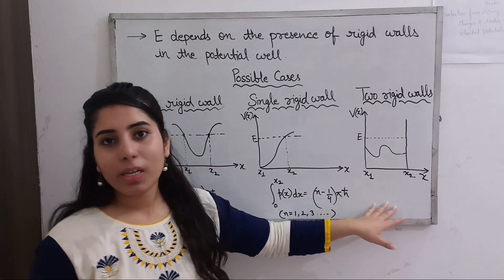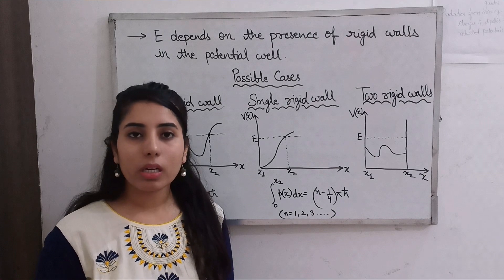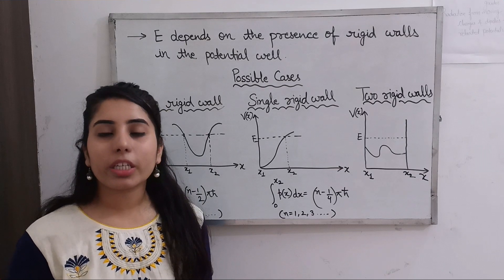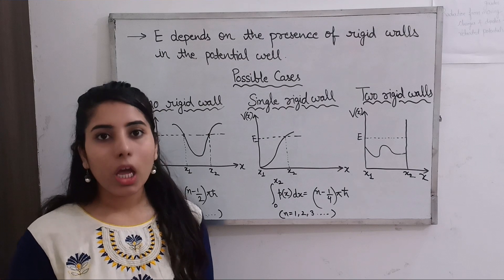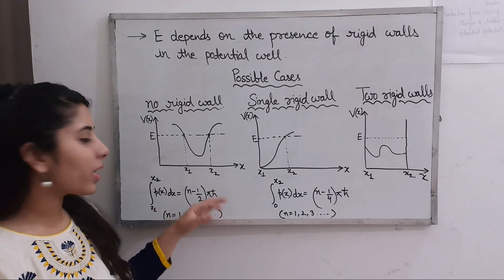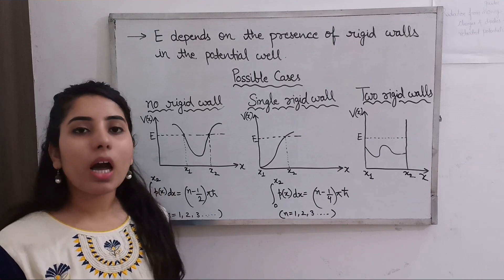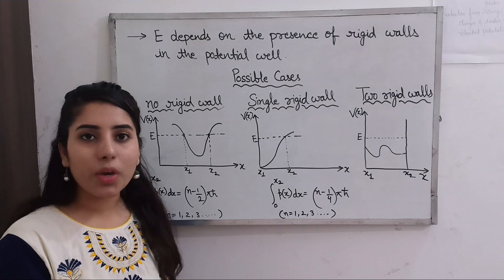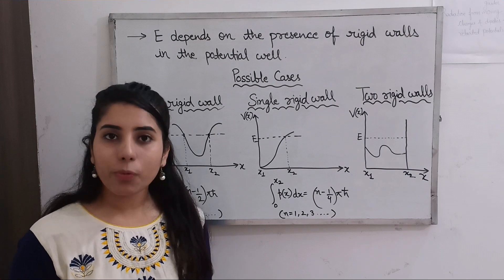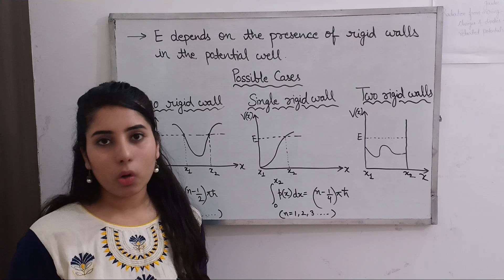I am going to tell you a common formula for the WKB method in the next video. My suggestion is to remember that one common formula, because using separate formulas for each case can lead to confusion. With just one formula, you put in the appropriate values of n corresponding to the conditions and find the answer easily.